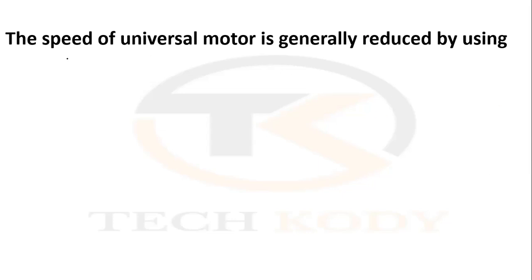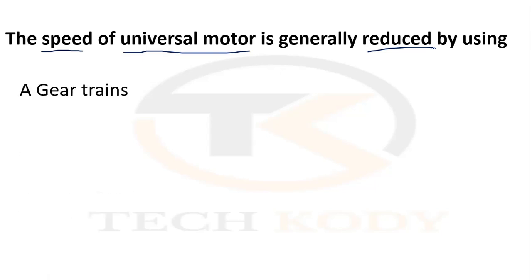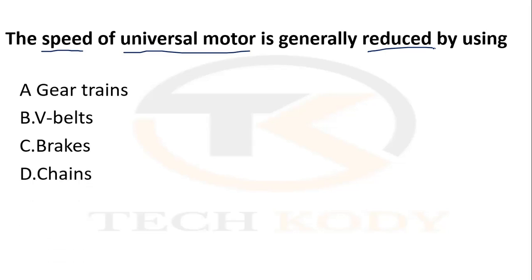The speed of a universal motor is generally reduced by — how can you reduce the speed? The options are gear trains, wheel belts, breakers, and chains. By using gear trains, you can reduce the speed of a universal motor.